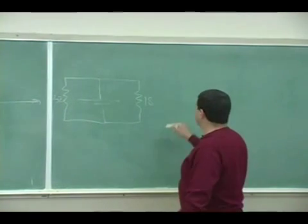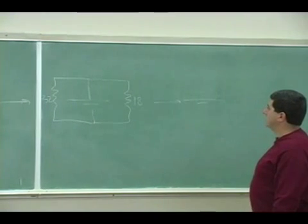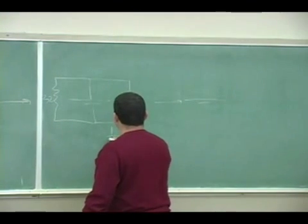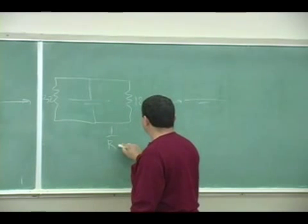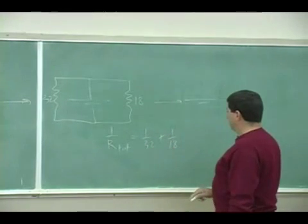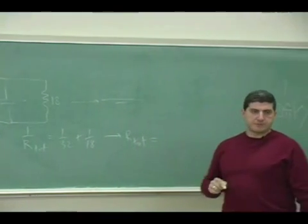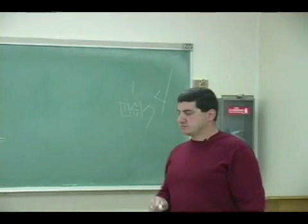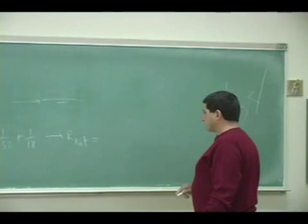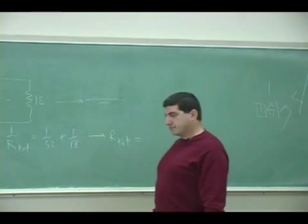So this one is going to be 1 over 32 plus 1 over 18, right? 1 over r total is 1 over 32 plus 1 over 18. And then r total is going to be... So it's got to be less than 18, right? It gives you a number that's less than the least number there.